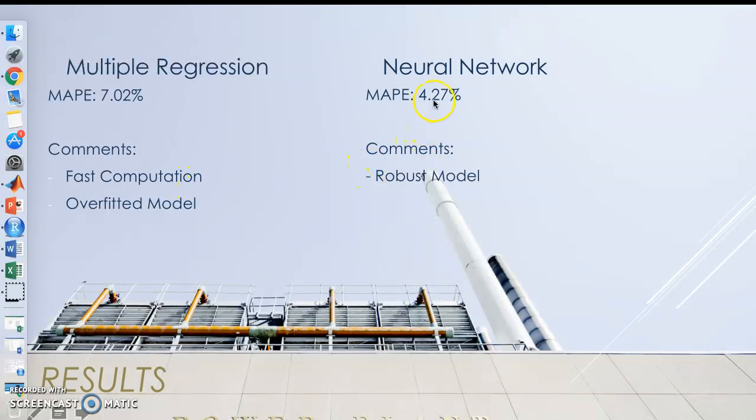Our neural network had a training set of 70% and a validation set of 15%, so that it can learn from that 15% and then use its 15% test data to see how robust it was. In which it was very robust and gave a lower MAPE of 4.27%.